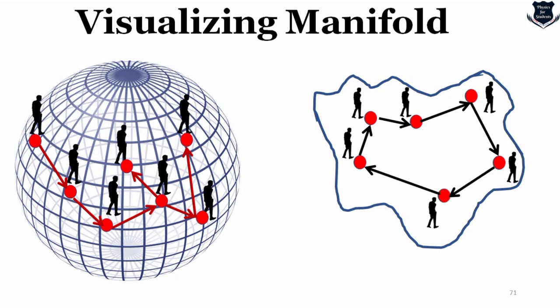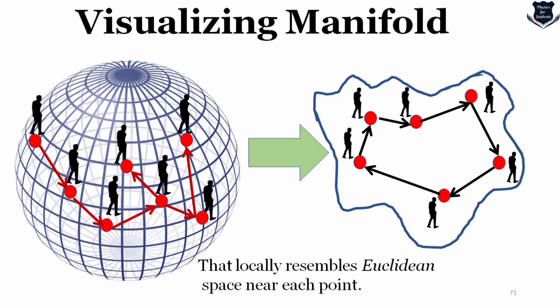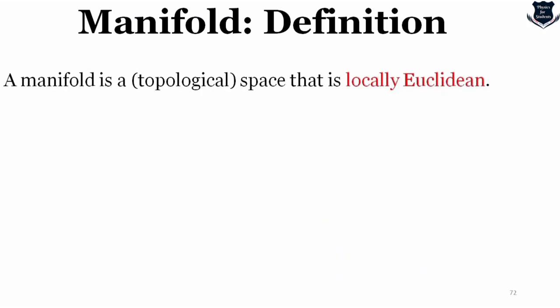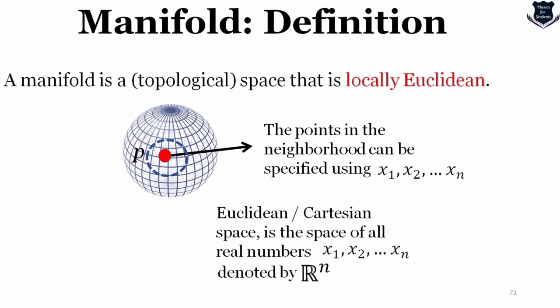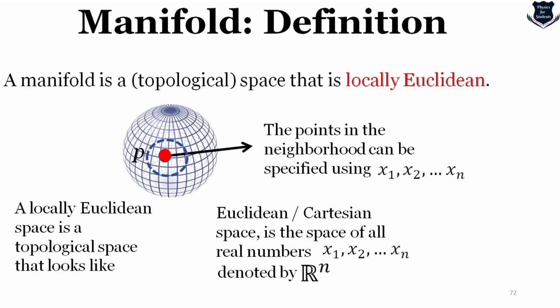What is a manifold? A person on a flat space is resembling that of a sphere, but to him it is locally Euclidean. This part is the global part and the walking is the local part. A manifold is a topological space that is locally Euclidean: a point P and its neighborhood can be described by tuples (x1, x2, ..., xn). Euclidean Cartesian space is denoted by ℝⁿ; a locally Euclidean space topologically looks like ℝⁿ. Because general relativity extensively deals with manifolds, we need to understand what a manifold is.